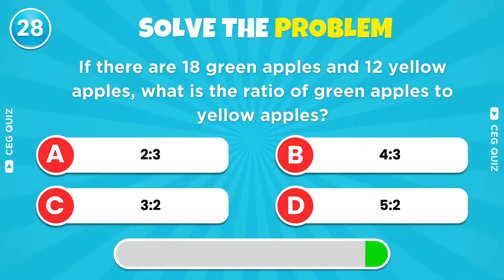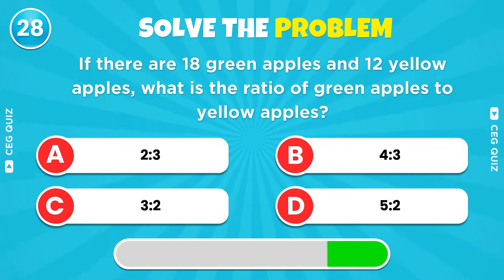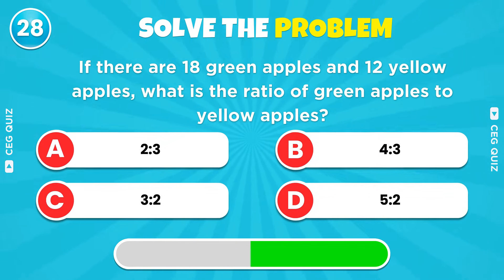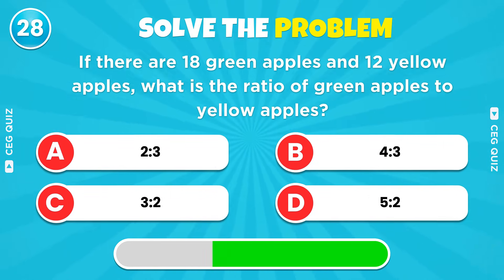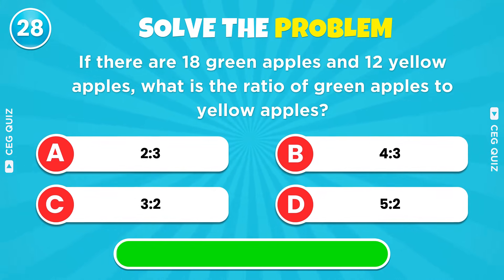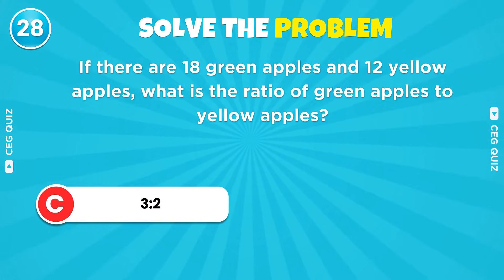If there are 18 green apples and 12 yellow apples, what is the ratio of green apples to yellow apples? The ratio is 3 to 2.